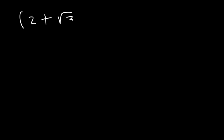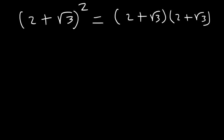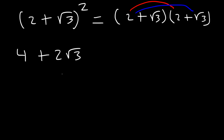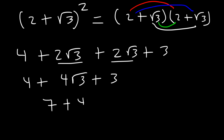What is the quantity 2 plus root 3 squared? You need to expand it by multiplying it by itself. These are not conjugates because the sign is the same, so the middle terms will not cancel — we need to FOIL completely. 2 times 2 is 4. 2 times root 3 is 2 root 3, and root 3 times 2 is also 2 root 3. Root 3 times root 3 is 3. Adding the middle terms: 2 plus 2 is 4, so 4 root 3. And 4 plus 3 is 7. The answer is 7 plus 4 root 3.